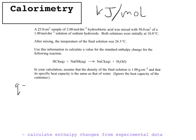Using Q = mcΔT, m is the mass of whatever is being heated. When two solutions are added together, we take the temperature of the total combined volume — that's where the heat goes, into the whole solution. So m = 25 + 50 = 75. We multiply by the specific heat capacity of water, 4.18, because most of hydrochloric acid and sodium hydroxide solution is water, so we take that as an assumption.